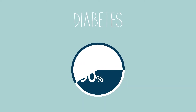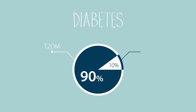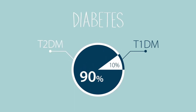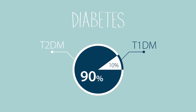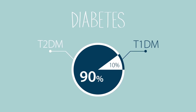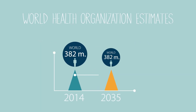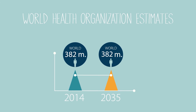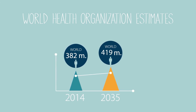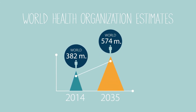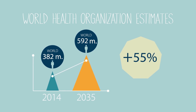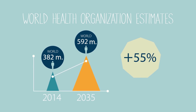Type 2 diabetes is the most common form of diabetes — it accounts for at least 90% of all cases of diabetes. The World Health Organization estimates that by 2035, about 592 million people will suffer from the disease.